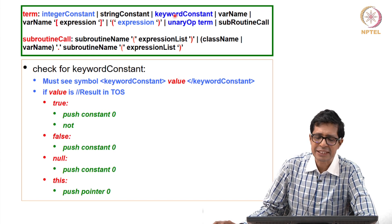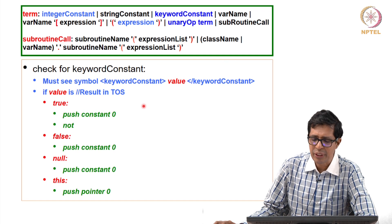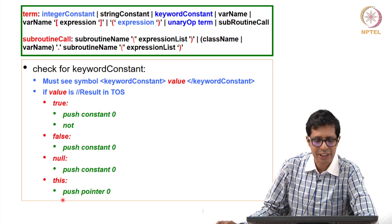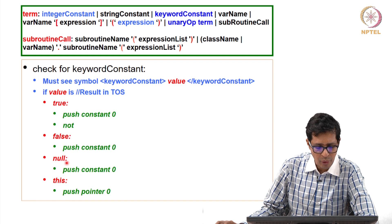A term can be just a keyword constant. There are 4 keyword constants: true, false, null, and this.